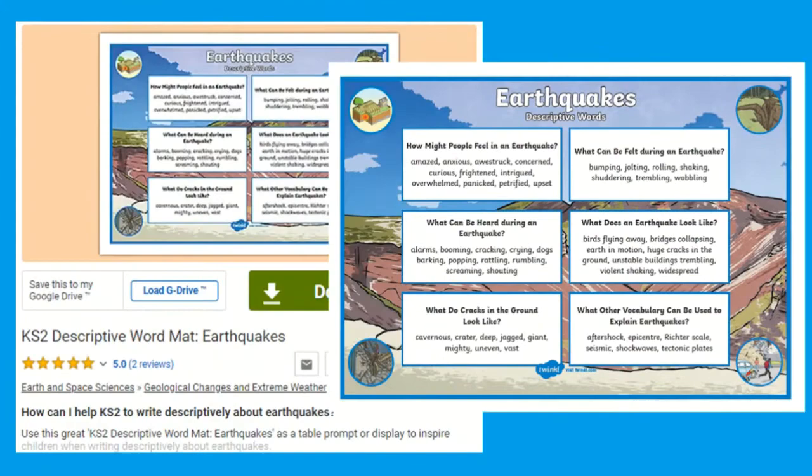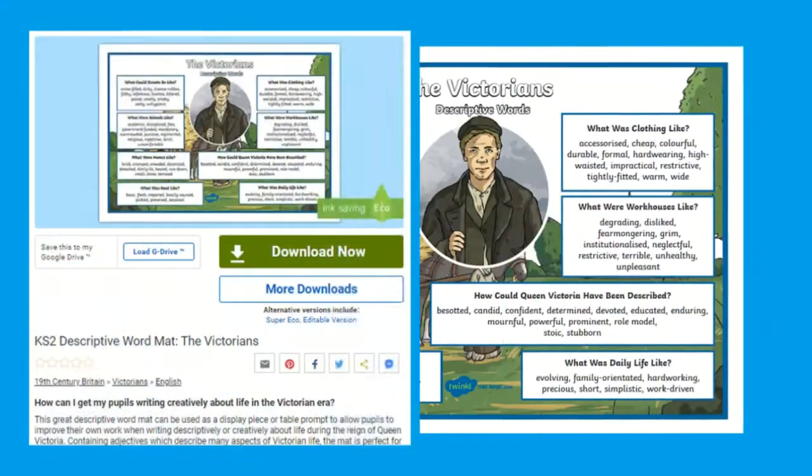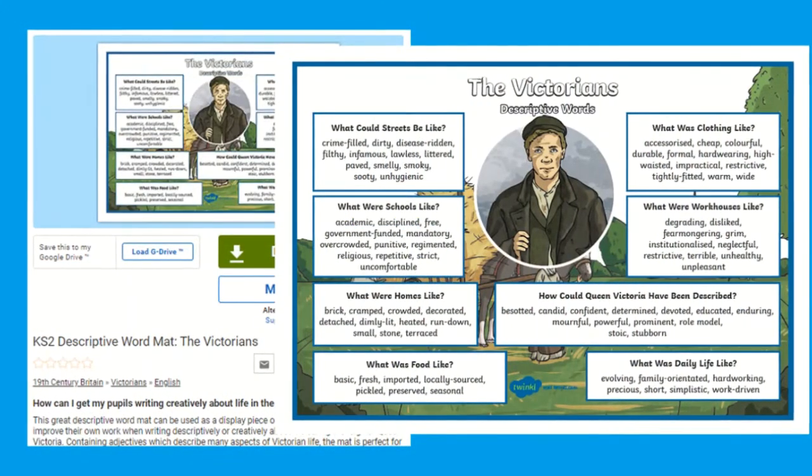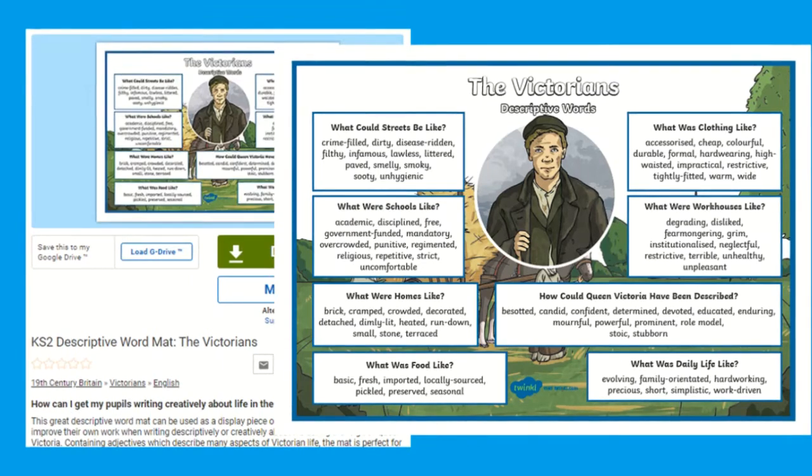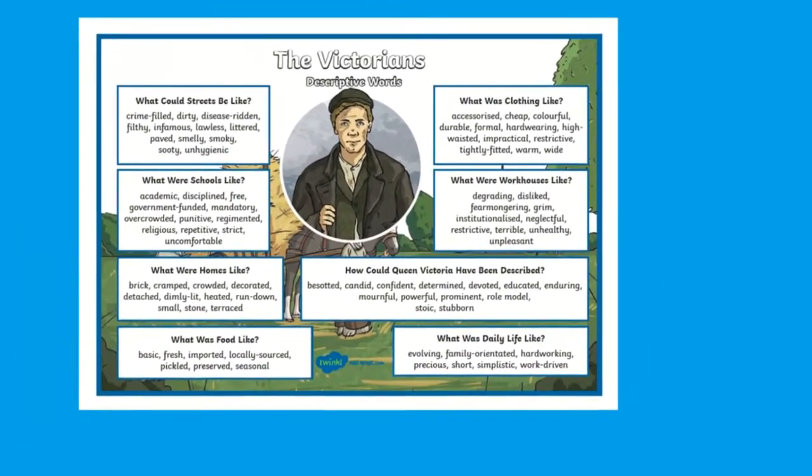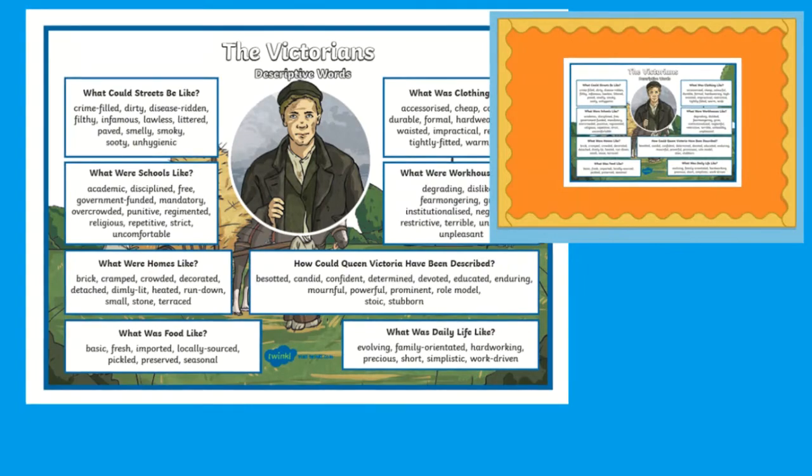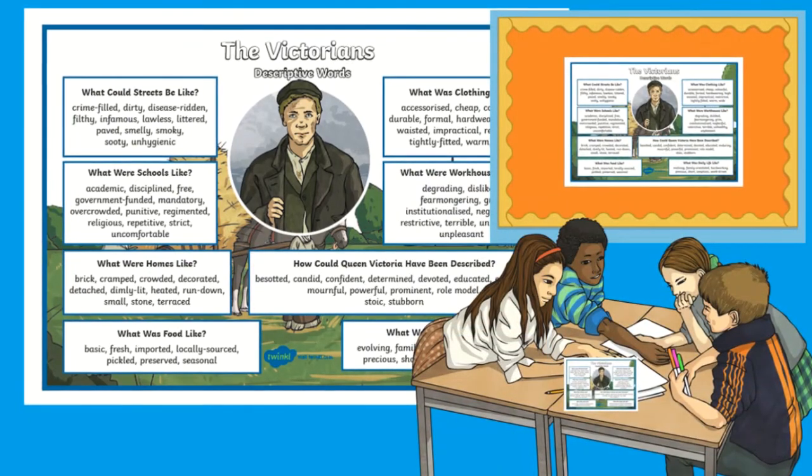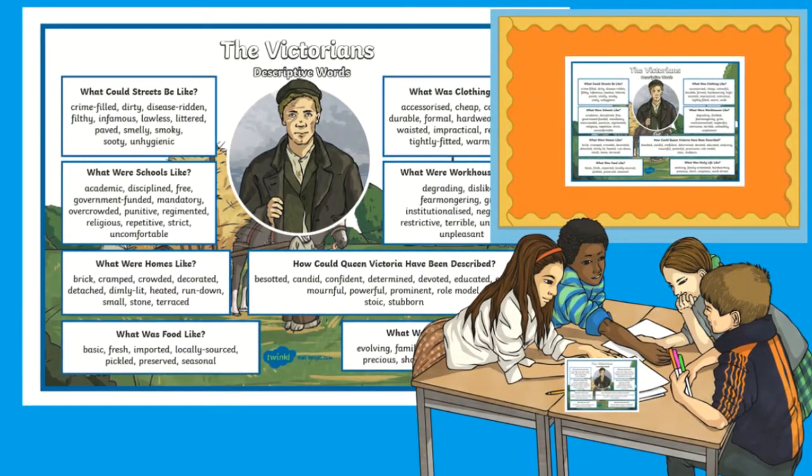You can also find descriptive word maps for topics in geography or history, such as the Victorians. These can be used as a display piece or table prompt to allow children to improve and support their own work when writing descriptively or creatively.